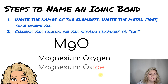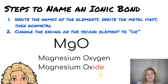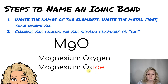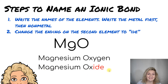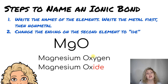Now for step two, you're going to change the ending of the second element to '-ide' at the end. So instead of it saying oxygen, we're going to remove that ending and put '-ide'. So it's going to be 'oxide' instead. Our final answer is magnesium oxide. That is telling us this is an ionic compound — they're no longer separate elements, now it's a compound with an ionic bond.